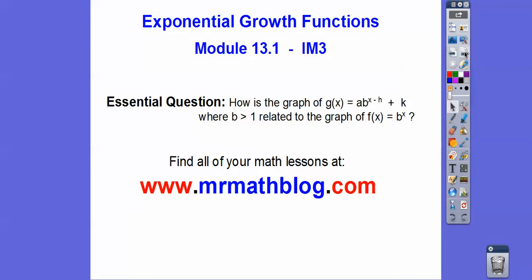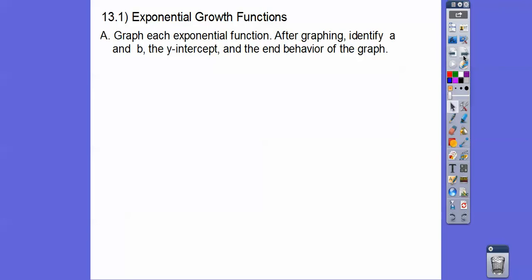So here's our question. How is the graph of g(x) = a times b to the (x - h) power plus k related to the graph of f(x) = b to the x power? So let's graph each exponential function. It's an exponential function because x is in the exponent position right here. That's why it's exponential.